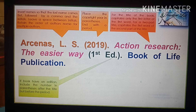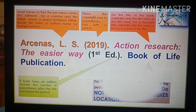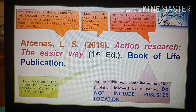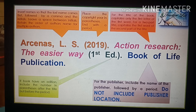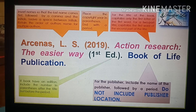If the book has an edition, include the edition number in parenthesis after the title but before the period. For the publisher, include the name of the publisher followed by a period — do not include publisher location. If the book has a DOI (Digital Object Identifier), include it if available. A DOI is a unique alphanumeric string that identifies content and provides a persistent link to its location on the internet.